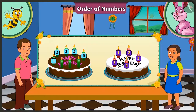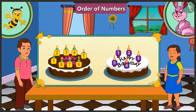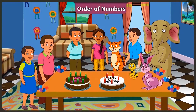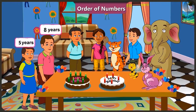Oh no, Bunty's cake has more candles on it. Come on, let's count them. See, one of Bubbly's candles and one of Bunty's candles. Bubbly's candles: 1, 2, 3, 4, 5 candles. And Bunty's candles: 1, 2...